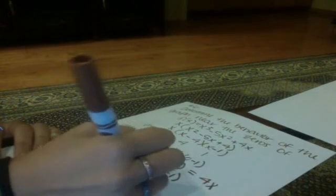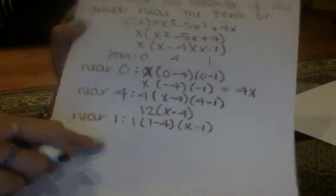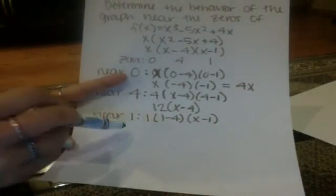And then you're going to find the behavior near the 1, which would be 1(1 - 4)(x - 1). And then 1 - 4 is -3, and that times 1 is -3. So it's -3(x - 1).